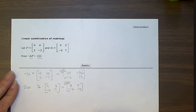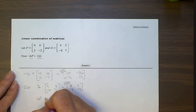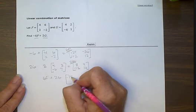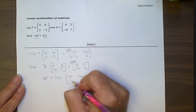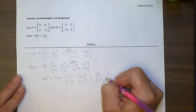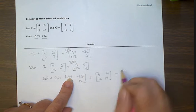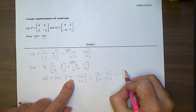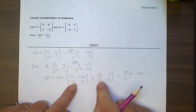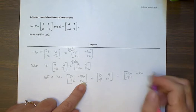Now we're going to add them together: negative 6F plus 2G. I'm going to rewrite: negative 24, negative 36, negative 12, 12, plus 8, 4, negative 12, 14. Then I'm just going to take each spot and add them together. Negative 24 plus 8 is negative 16. Negative 36 plus 4 is negative 32. Negative 12 plus negative 12 is negative 24. And 12 plus 14 is 26.